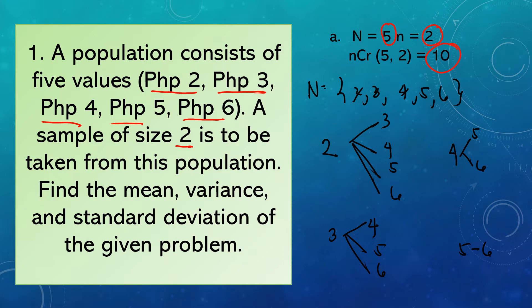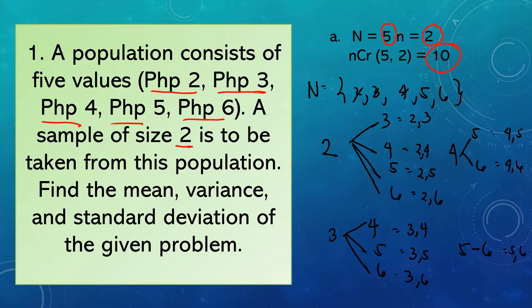After identifying the partners, we have: (2,3), (2,4), (2,5), (2,6), (3,4), (3,5), (3,6), (4,5), (4,6), and (5,6). Let's count: one, two, three, four, five, six, seven, eight, nine, ten. Therefore, we already have ten total samples.